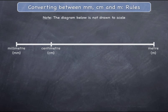The diagram shown represents the units of length from smallest to largest as you move from left to right. The order of size from smallest to largest is millimetres, centimetres and metres.